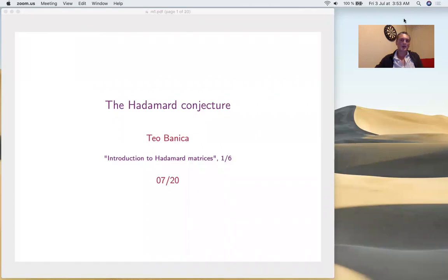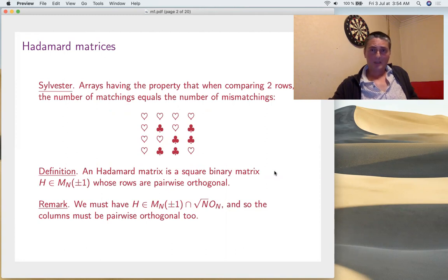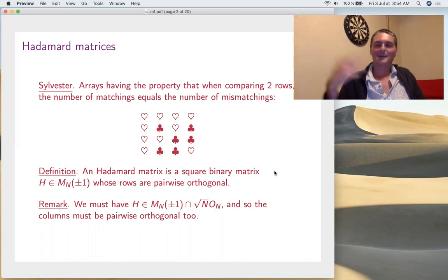We'll talk about the Hadamard conjecture, the main statement in the real case. The story started actually before Hadamard with Sylvester in the 19th century. He was motivated by ornaments and started to look at binary arrays having the property that when comparing two rows, the number of matchings equals the number of mismatchings. That's an example here comparing rows - we have two matchings, two mismatchings, and so on. This is Hadamard.